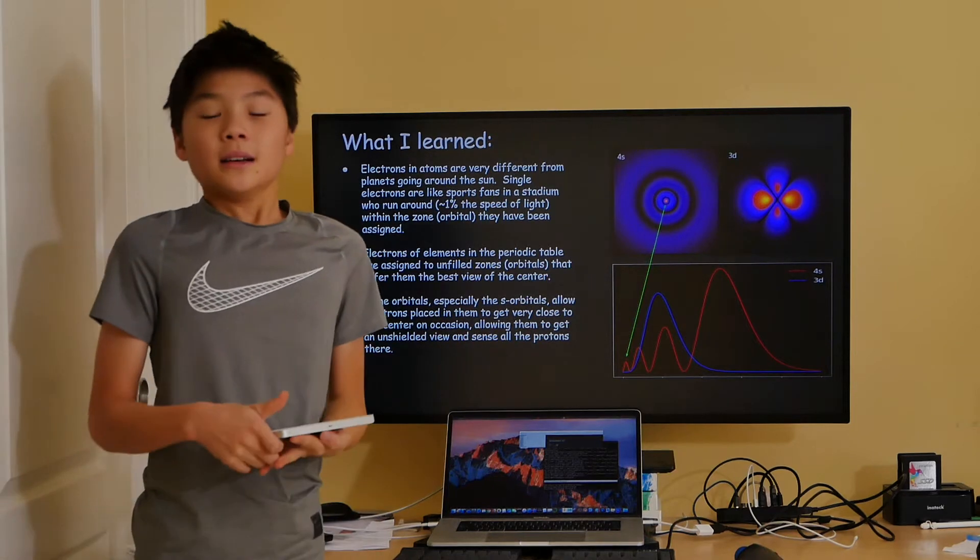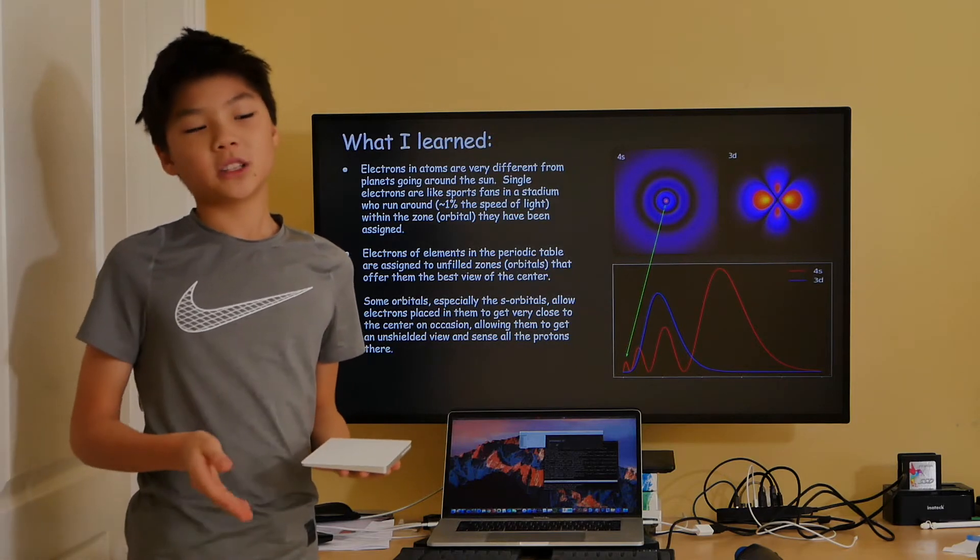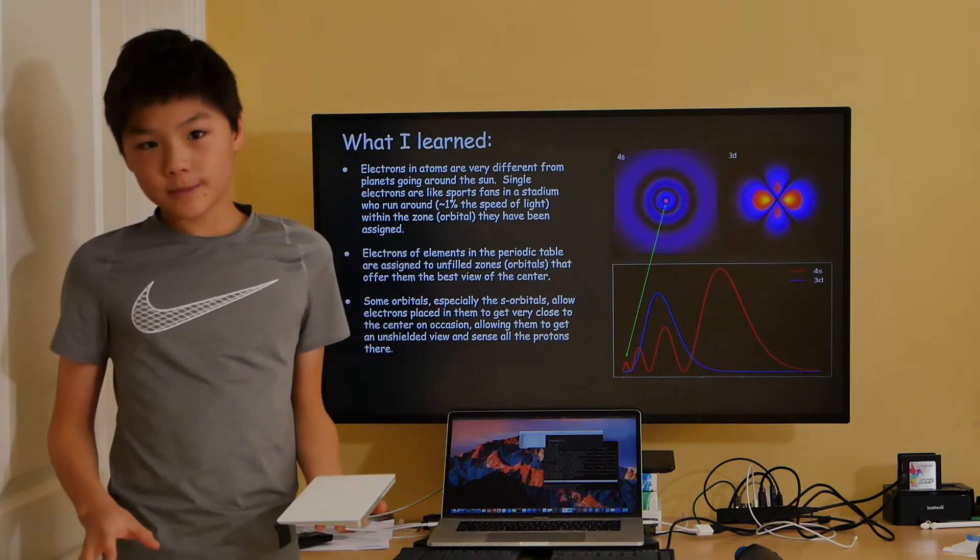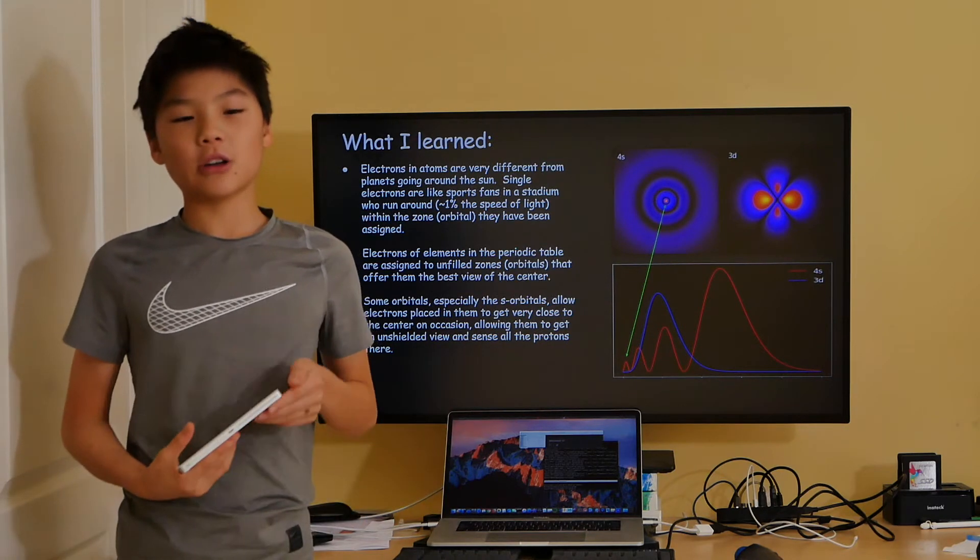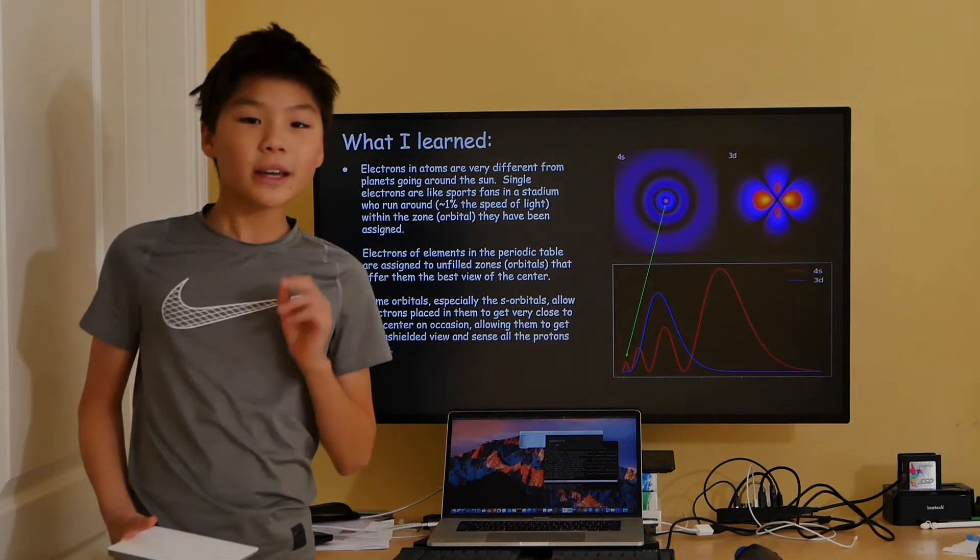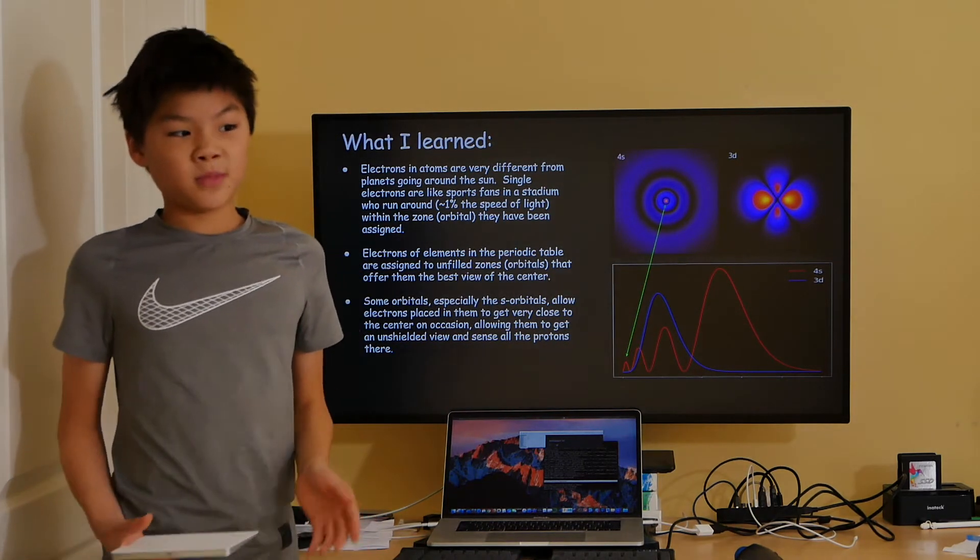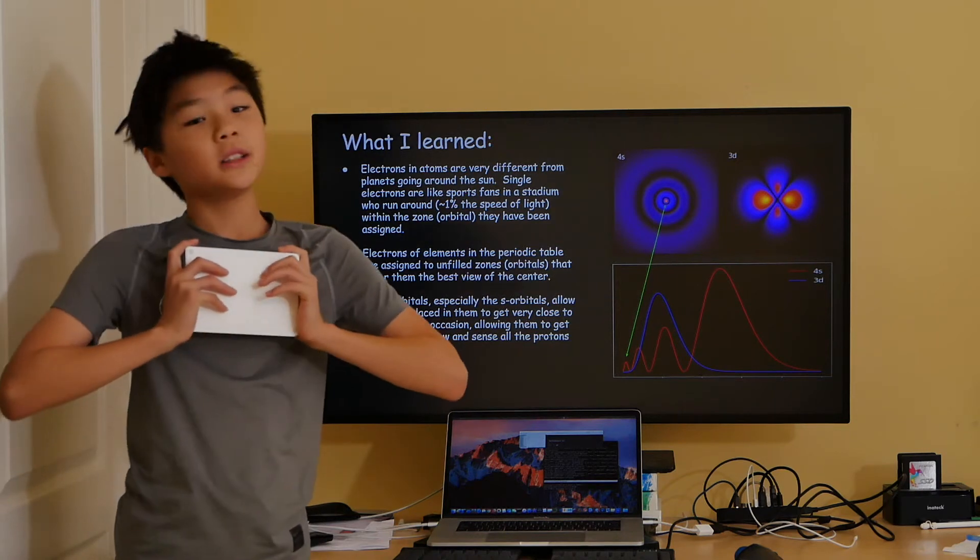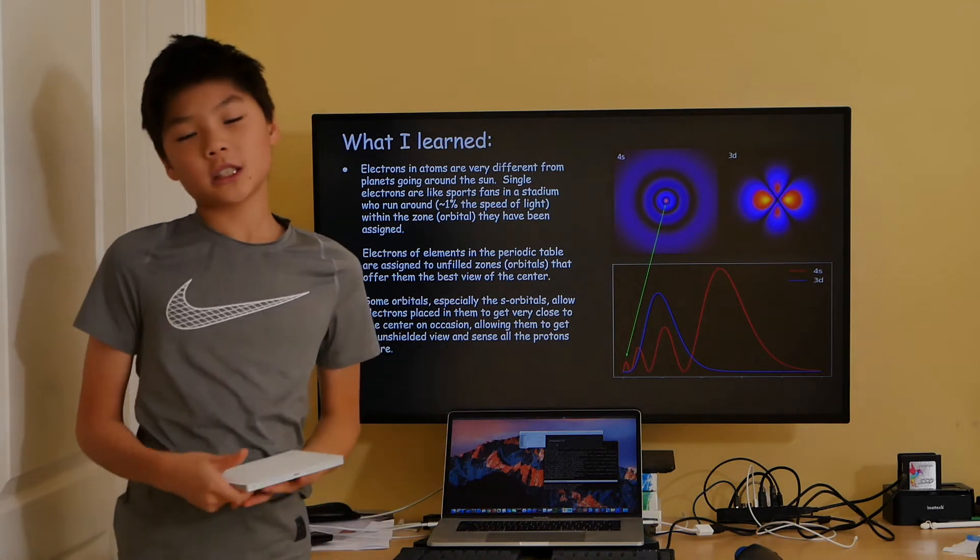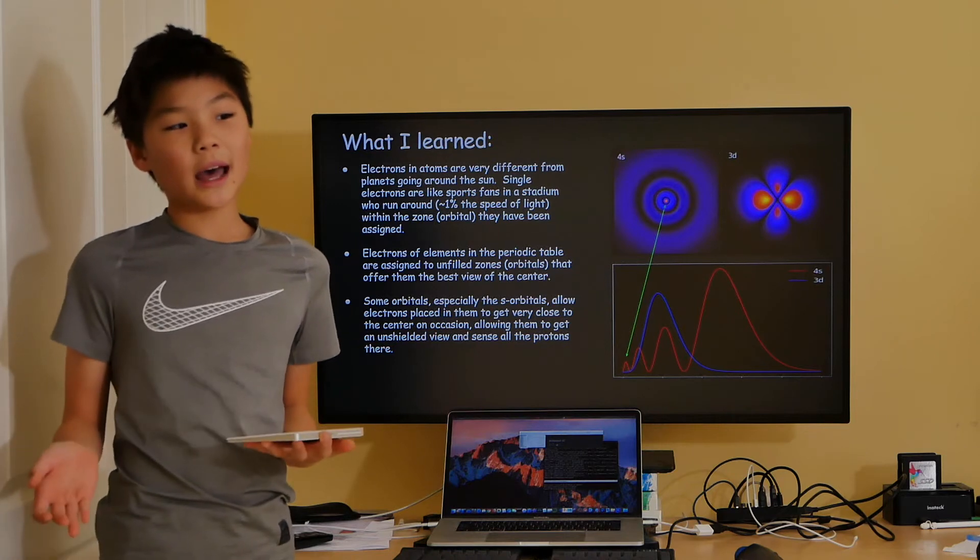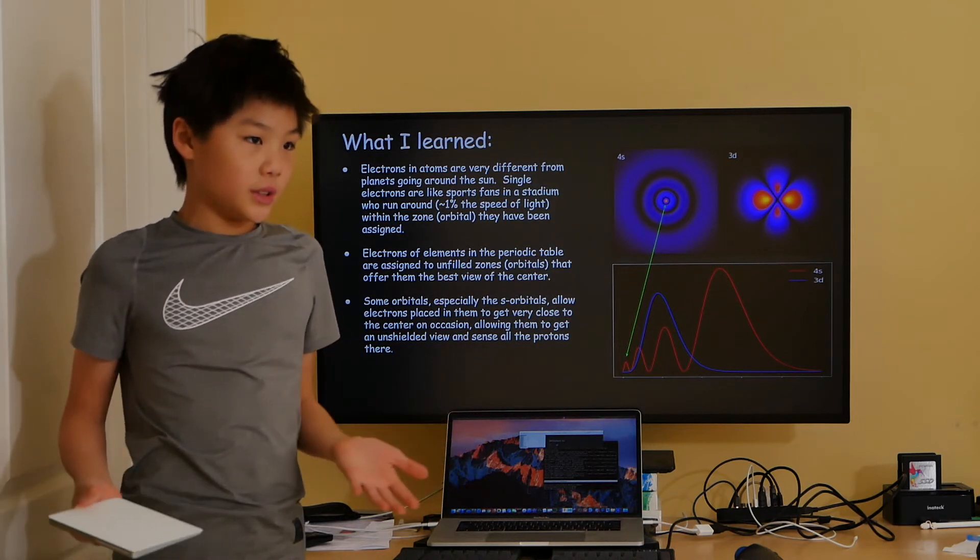I learned a lot. Electrons going around in the atoms is actually very different than planets going around the Sun. Electrons are better thought of as crazy spectators who run around at 1% the speed of light. At this speed, they can go around the Earth in 18 seconds. Now imagine going at that speed inside an atom. Electrons of elements are assigned to unfilled zones sequentially that offer them the best possible view of the center. A few orbitals, especially the s orbitals, allow electrons to get really close to the center on occasion and let them have the ability to sense all the protons in there.